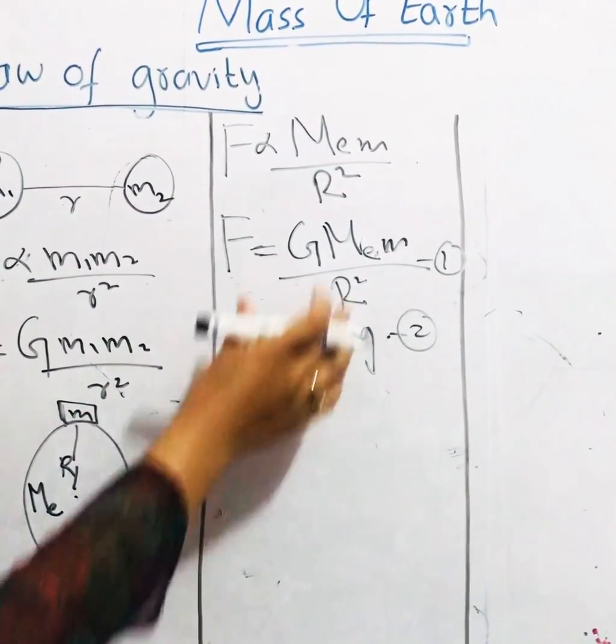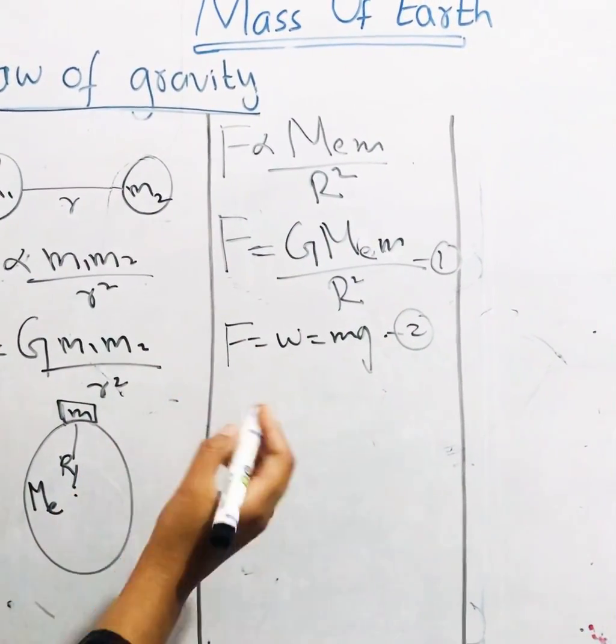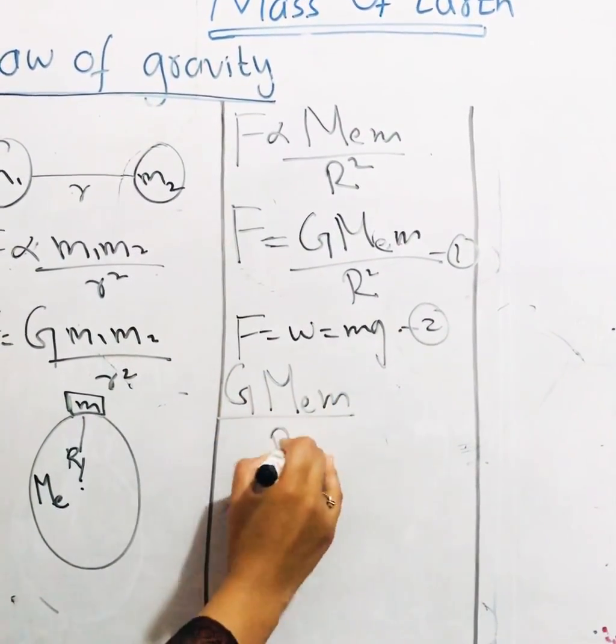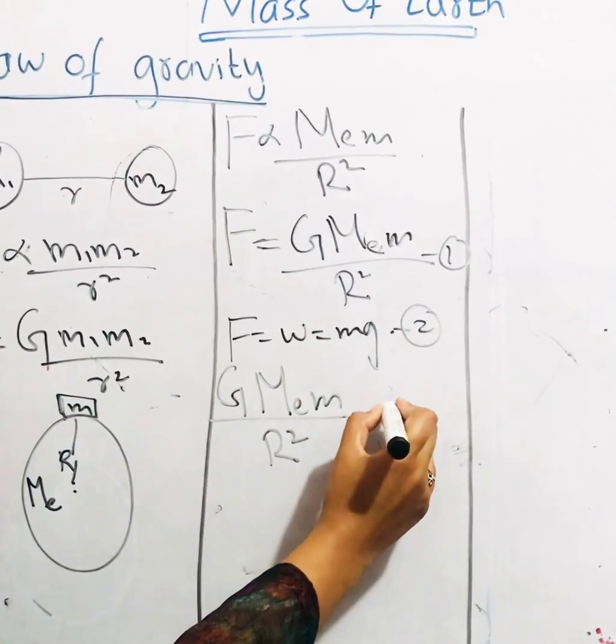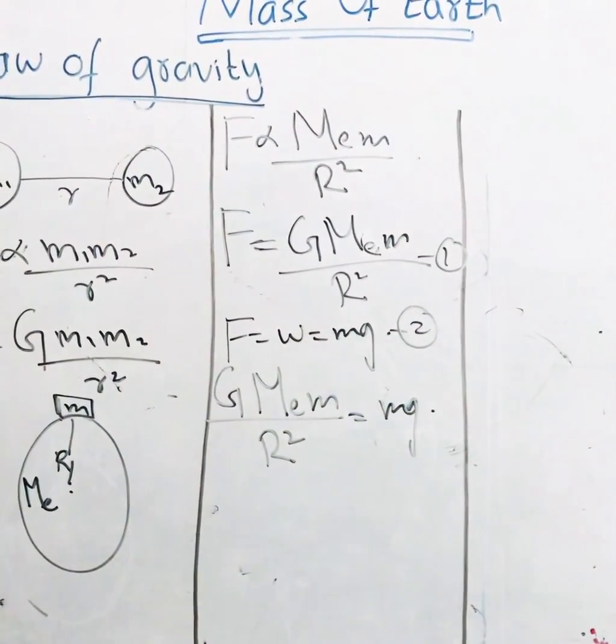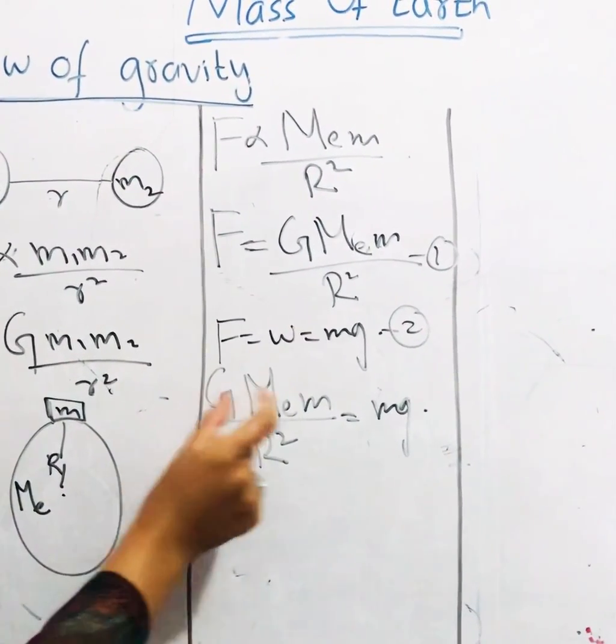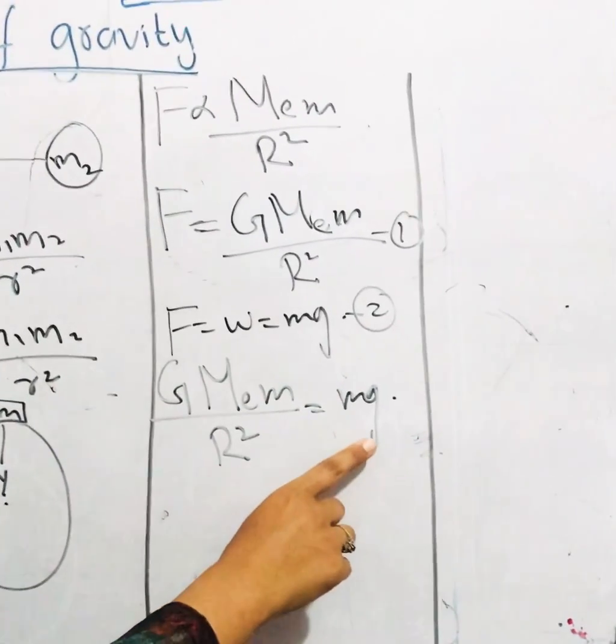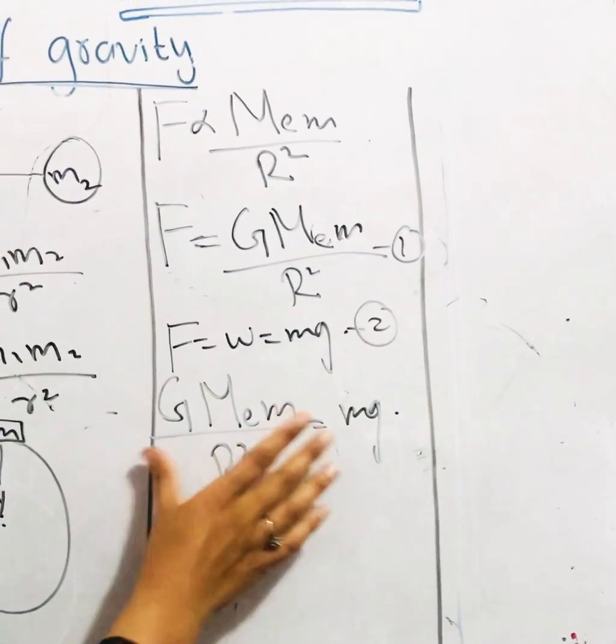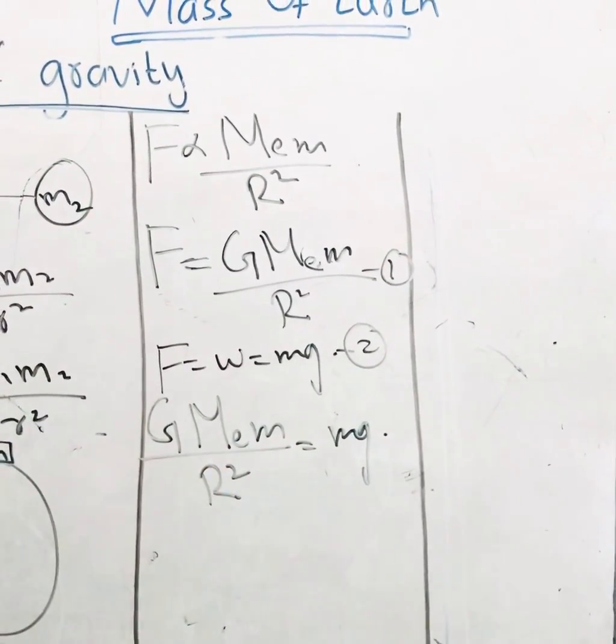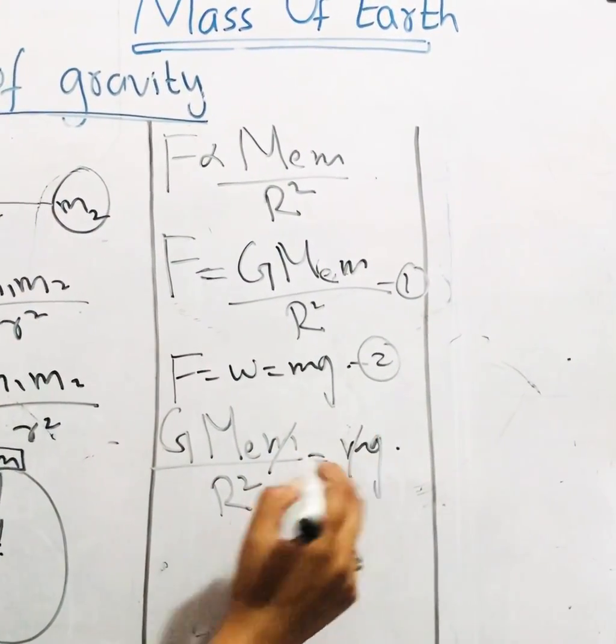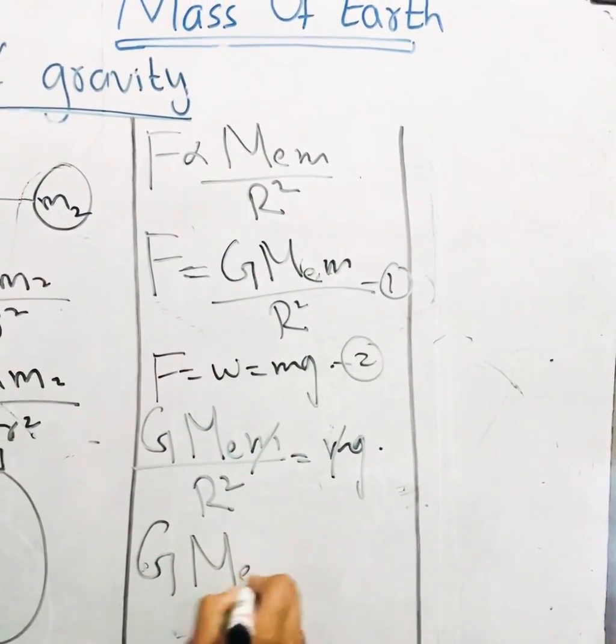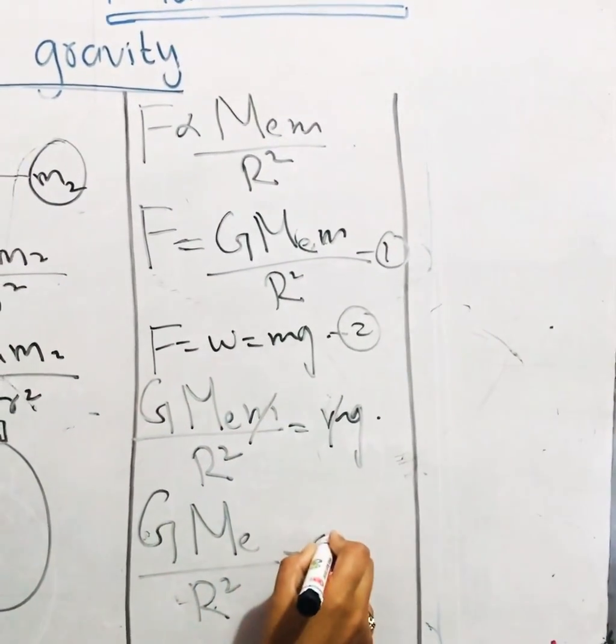Now I can easily equate these two equations with each other. So after equating I left capital G M E m divided by R square which is equal to mg. This is capital G universal constant and this is acceleration due to gravity. The value of this small g is fixed on the surface of Earth but it varies with altitude. Please don't mix these two g with each other. So I can easily cancel out these small m with each other and I left with capital G M divided by r square which is equal to g.